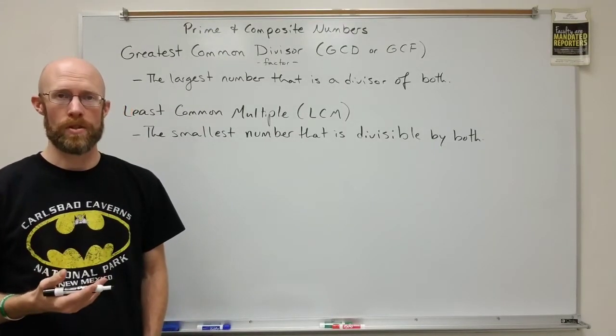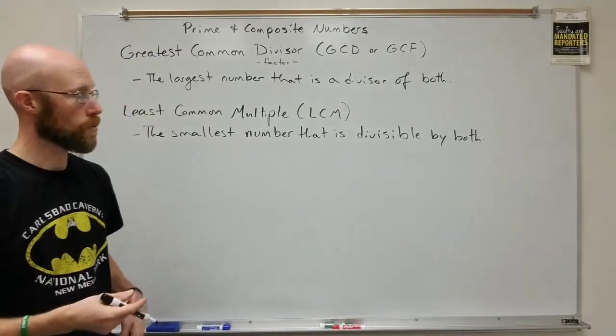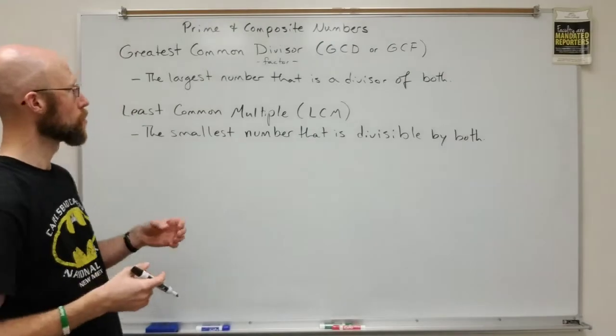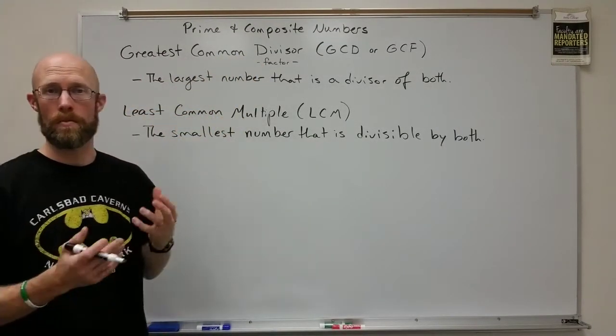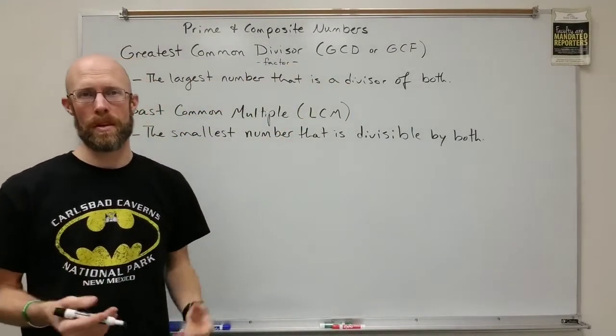Next, we're going to look at a couple of really interesting features of natural numbers when we compare them. If we've got two or more natural numbers together, we can find what we call the greatest common divisor and the least common multiple. Some of you may have heard this called the greatest common factor before instead of divisor, it means the same thing.